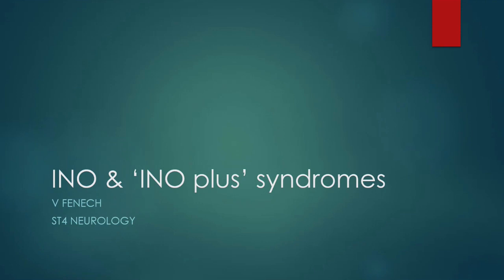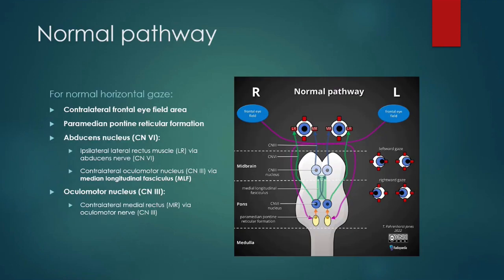For my 1-2-5, I wanted to talk about INO and INO-plus syndromes. In order for a normal horizontal gaze to take place, you need coordination between the medial and the lateral rectus muscles. The lateral rectus muscle is supplied by the abducens nerve, which originates from the sixth cranial nerve nucleus at the level of the pons.